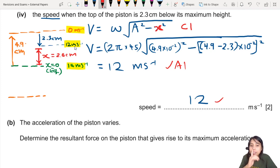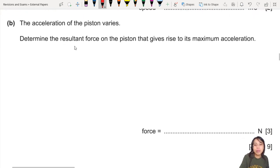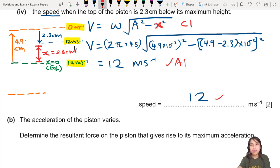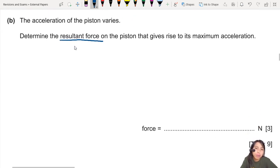The acceleration of the piston varies. It's simple harmonic motion. Determine the resultant force on the piston that gives rise to maximum acceleration. Three marks. So what are the forces acting on this piston? If you think about it, you know there's gravitational force, weight, but then there's the force from the gas that we don't really know. Actually we don't have to worry too much about it because they asked you to find the resultant force. Newton's second law: f = ma.